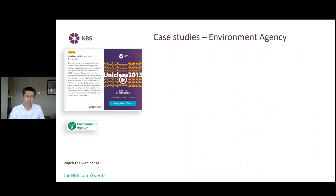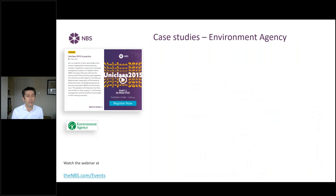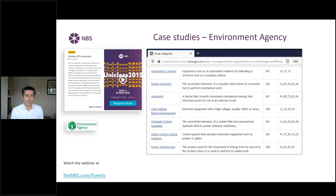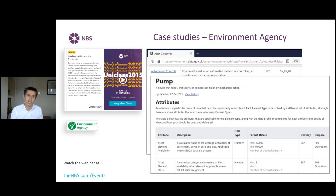Moving away from buildings and going to infrastructure, there's a fantastic Environment Agency case study on the NBS website. This is their data requirements library for all of their assets across the United Kingdom, each one having a UNICLASS code — whether it's a system or product, whether it's an element or a function — and then the Environment Agency's technical requirements against each one of those types, going down to things like enumerated values and data types.